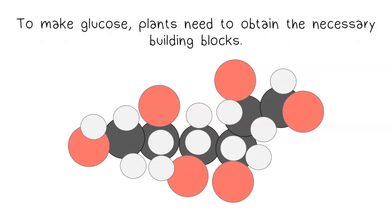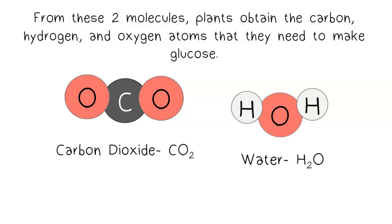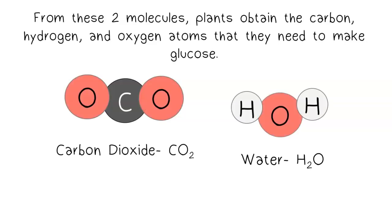To make glucose, plants need to obtain the necessary building blocks. Plants obtain two reactants from their environment: carbon dioxide and water. From these two molecules, plants obtain the carbon, hydrogen, and oxygen atoms that they need to make glucose.